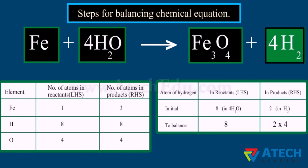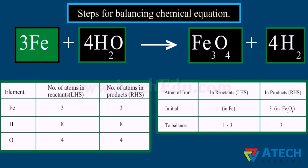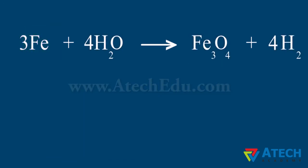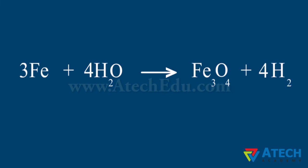Iron and hydrogen atoms are still not balanced. We multiply the hydrogen atoms by four on the right hand side so that the number of hydrogen molecules becomes balanced on both sides. Then we pick up the next unbalanced element: multiply the iron atoms by three on the left hand side so it balances with the right hand side. Finally, count the atoms of each element on both sides to check the correctness of the balanced equation.